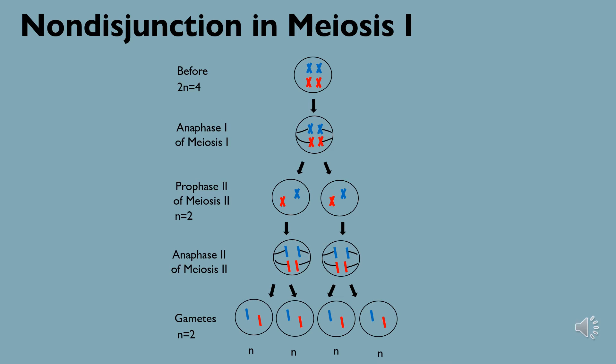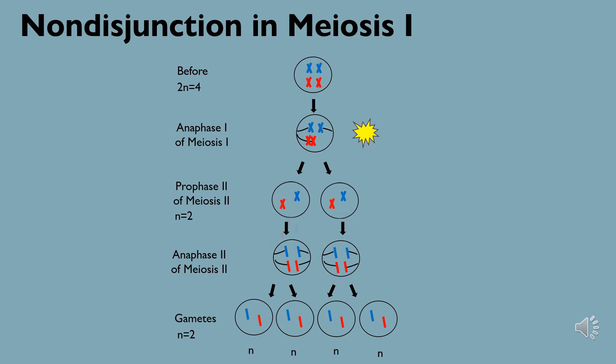During anaphase 1 of meiosis 1, homologous chromosome pairs separate and move towards opposite poles of the cell. Nondisjunction occurs in meiosis 1 when these homologous chromosome pairs fail to separate, resulting in one haploid daughter cell with an extra chromosome and the other with a missing chromosome at the end of meiosis 1. The effects of this nondisjunction are propagated as the cell completes meiosis, even with normal function during meiosis 2.